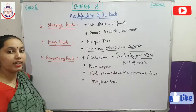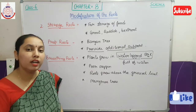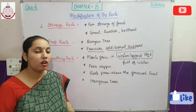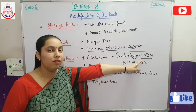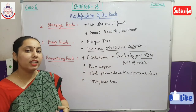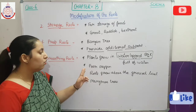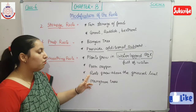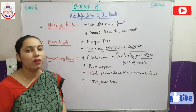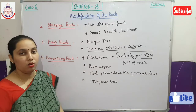Next is breathing roots. As the name suggests, these are for breathing purposes. Some plants grow in waterlogged soil, meaning soil that is completely full of water. In this waterlogged soil, there is a deficiency of oxygen, but plants also need oxygen for breathing. So, to take in oxygen, the roots grow above the ground level, where oxygen is available. That type of root is known as breathing roots.